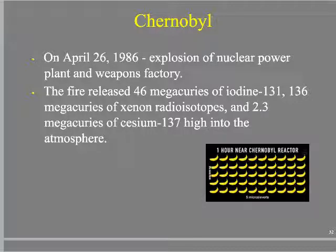It released 136 megacuries of radioactive xenon gas, and 2.3 megacuries of cesium-137 that still contaminates the woods around Chernobyl today. In fact, it contaminated the entire northern hemisphere of the planet — there was nothing in the northern hemisphere that wasn't impacted to some degree. Shielding was apparently super helpful, and maybe that step should not have been skipped.